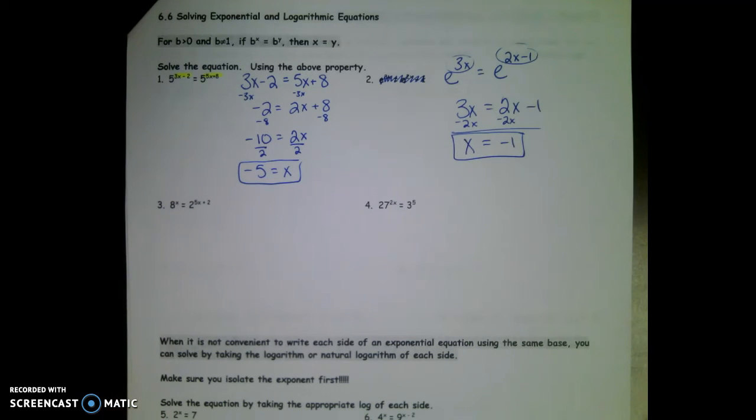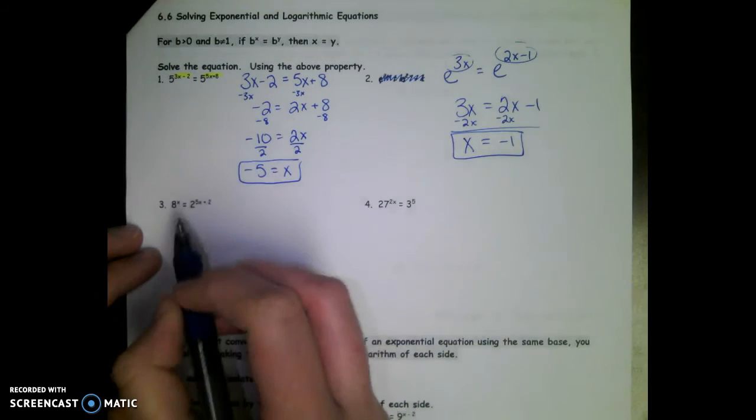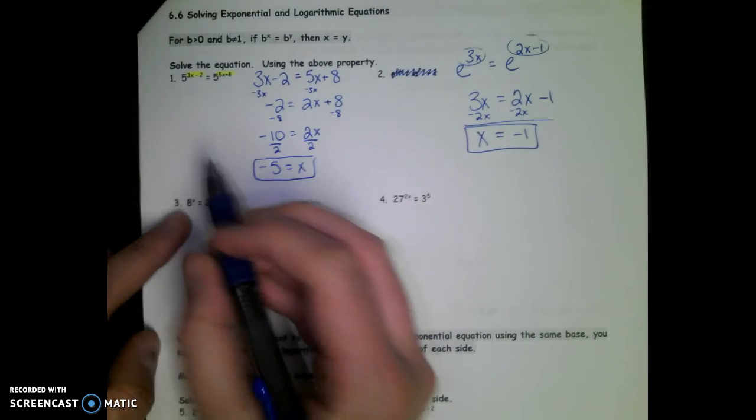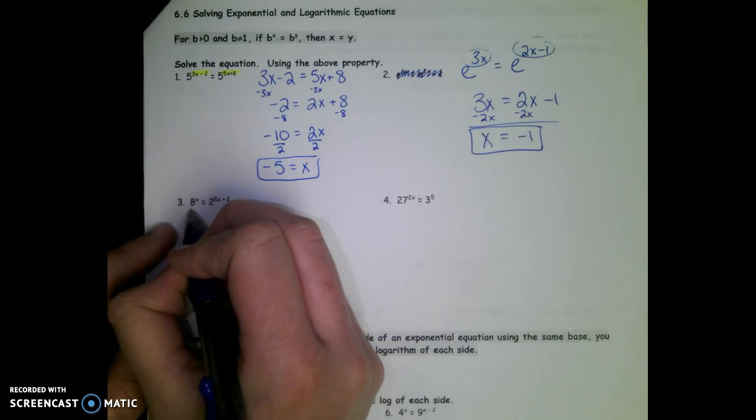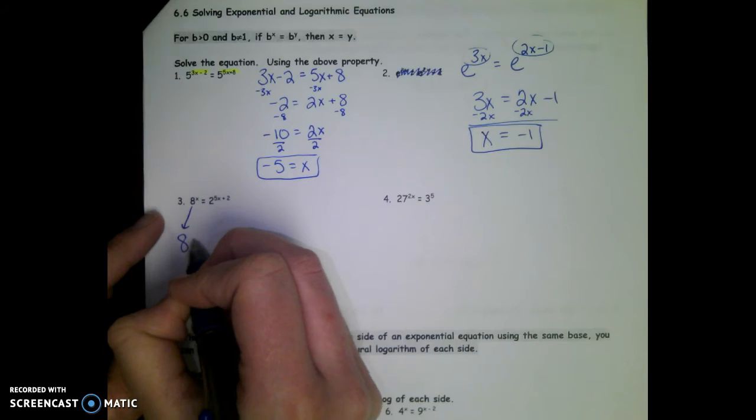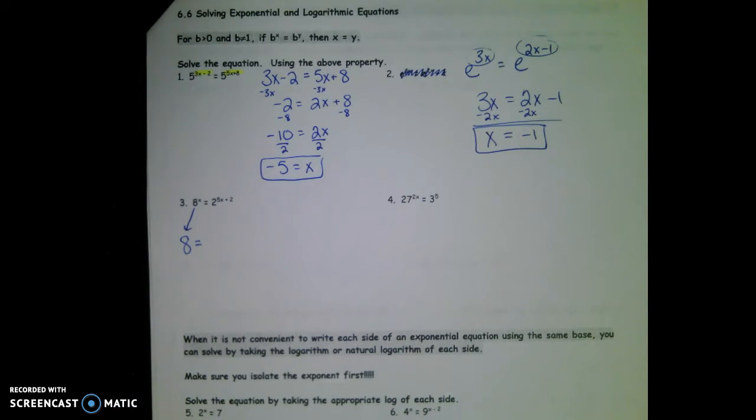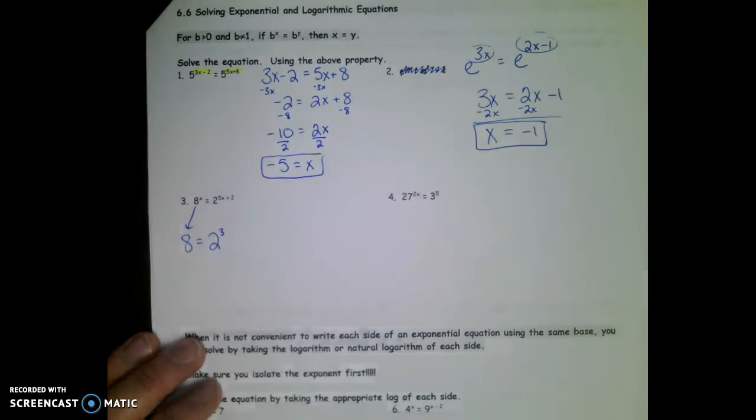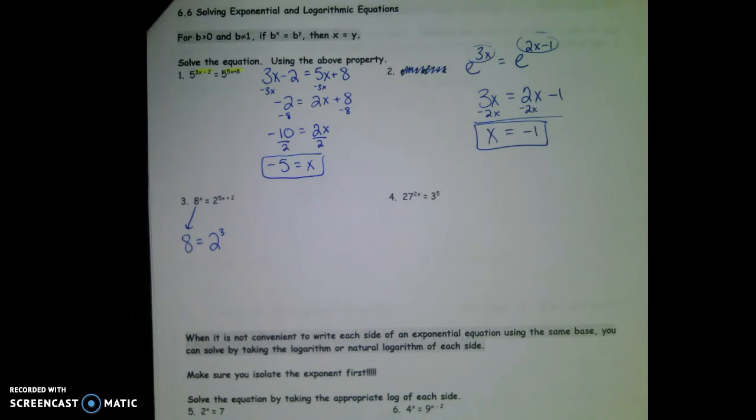This is super easy until what happens in number three. Eight and two are not the same. So before we do anything, we need to think about what can we do to make eight and two the same. Take the bigger number, eight. Is there another way to write eight in terms of two? Think about two squared is four. What's two to the third? Eight.